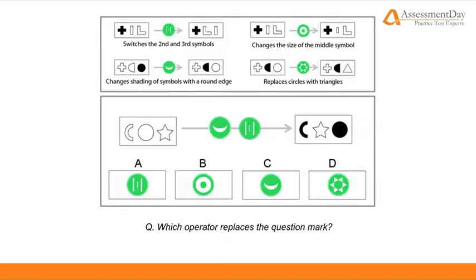This leaves us with the answer of a black C, white star, and black circle. Thus, we are in no doubt that the correct operator which replaces the question mark is the crescent, option C.